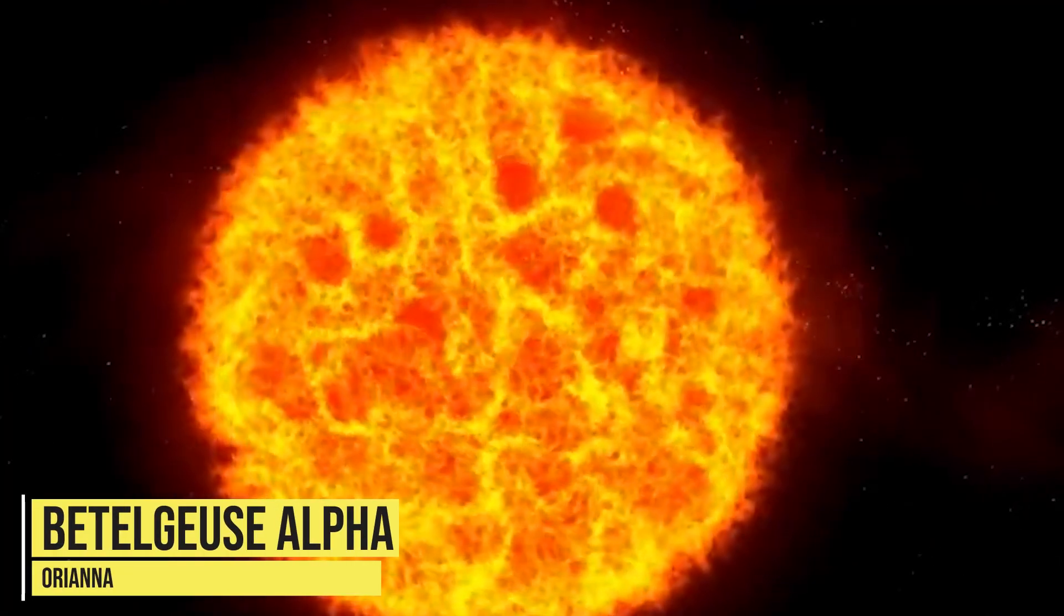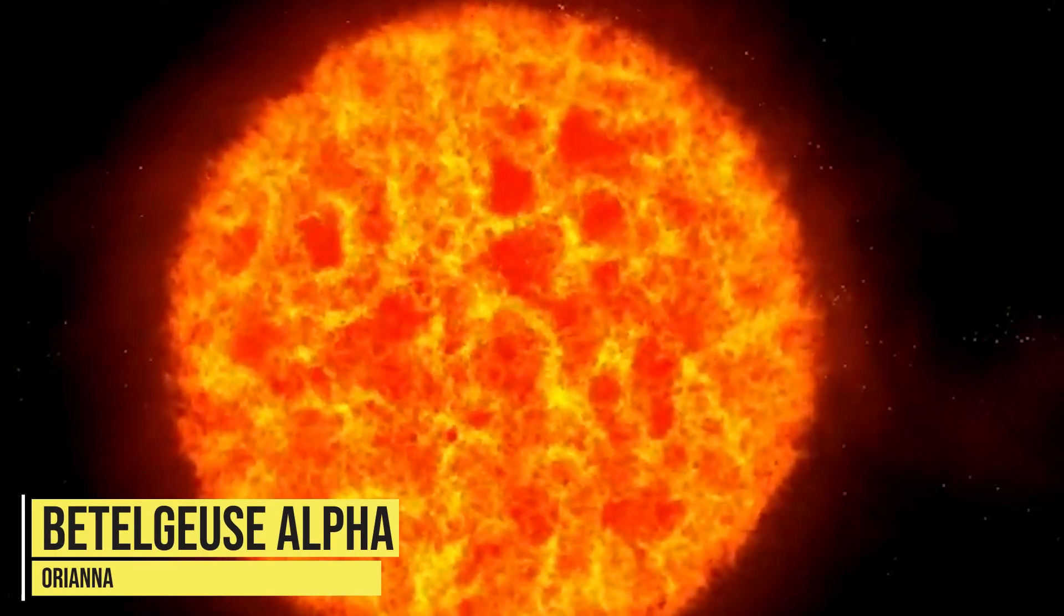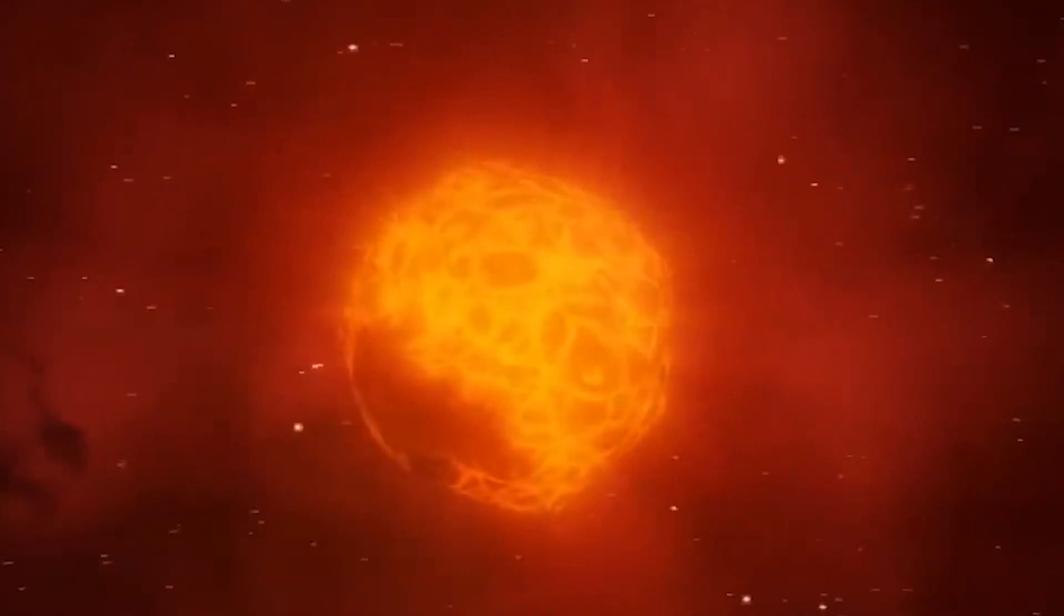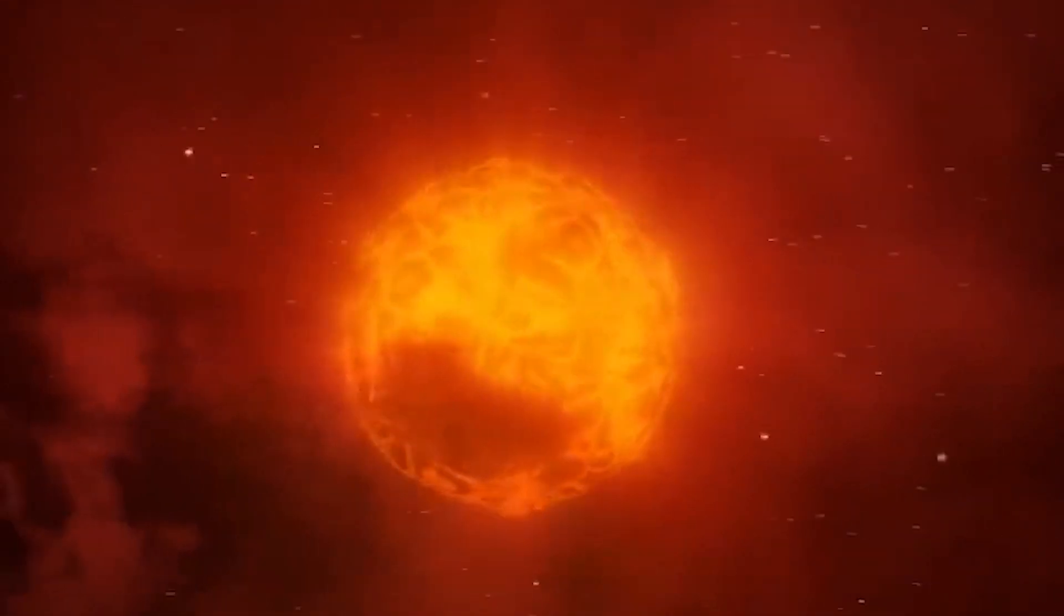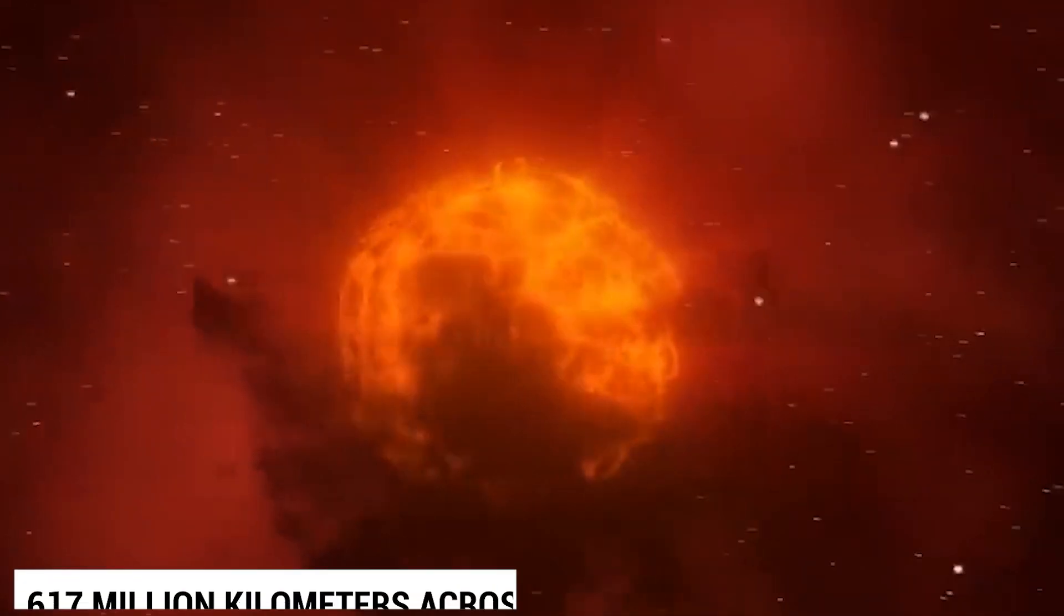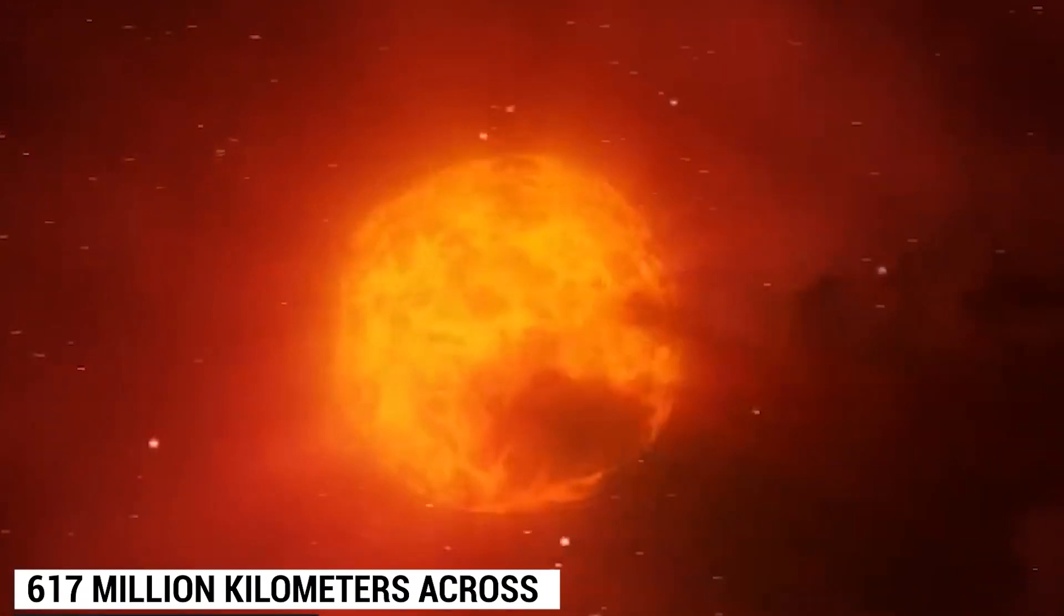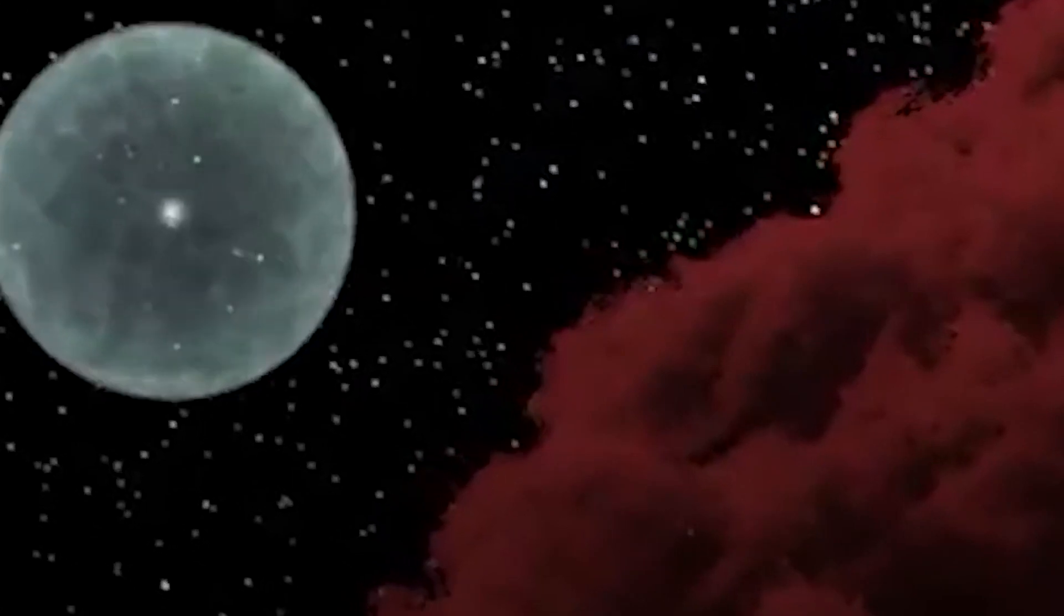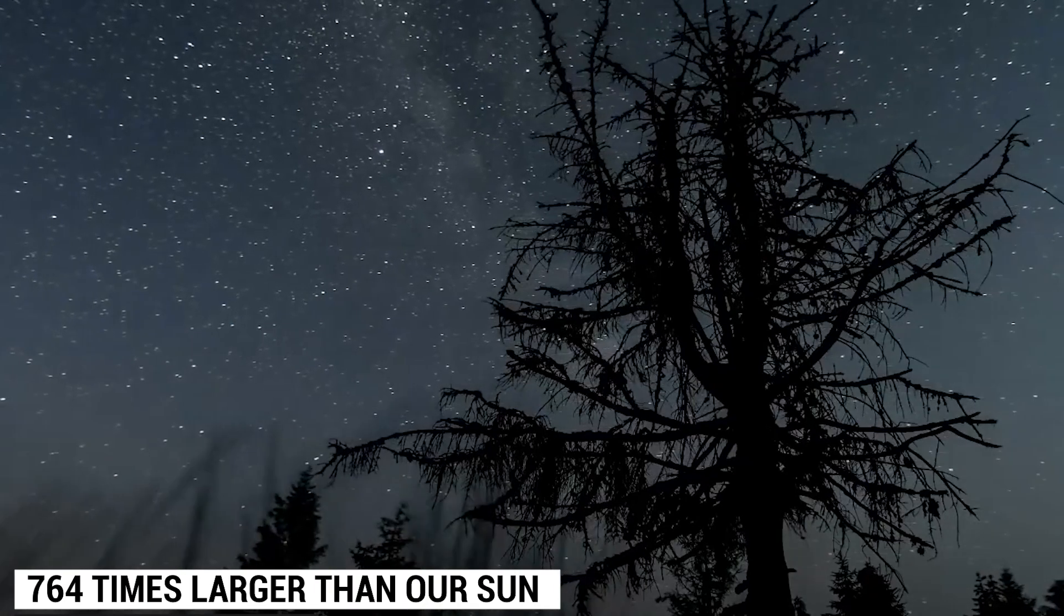Betelgeuse Alpha Orionis is a red supergiant star approximately 1,000 light years from Earth. It is in the constellation of Orion, the mythical hunter, and is about 670 million kilometers across. This indicates it is approximately 764 times larger than our sun.